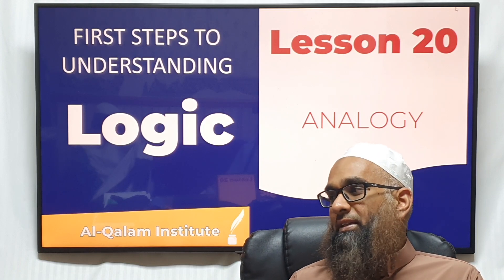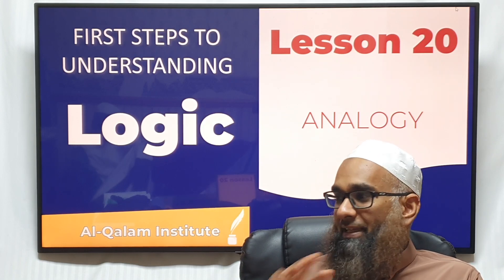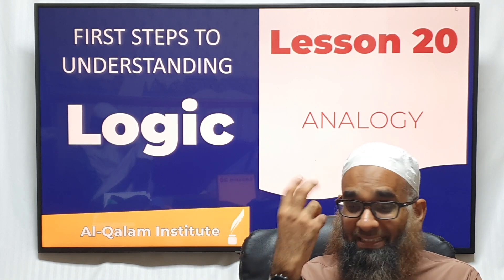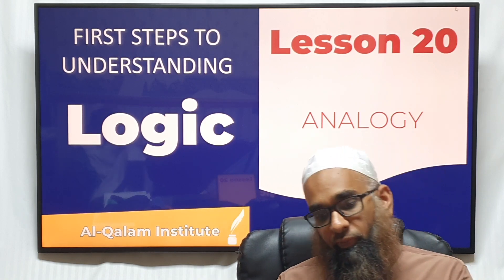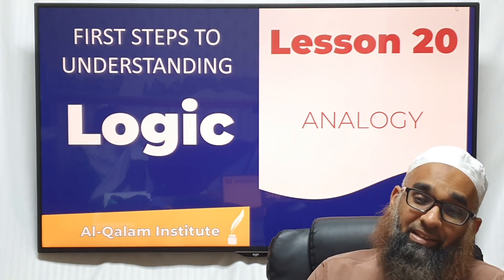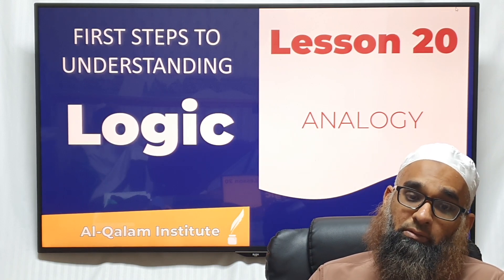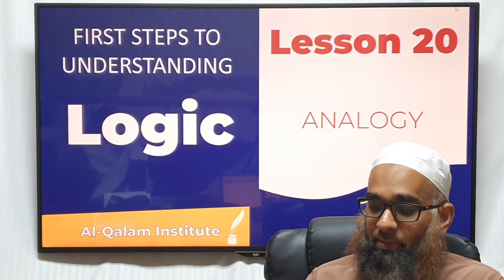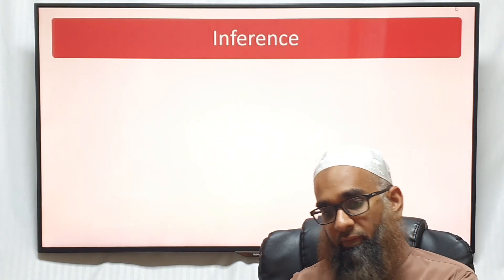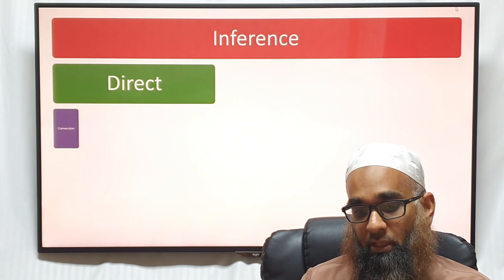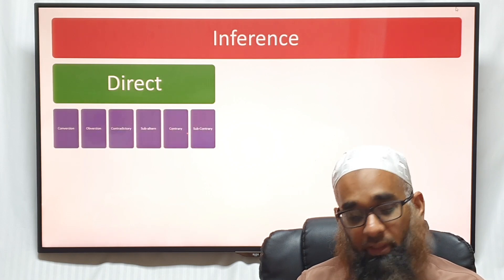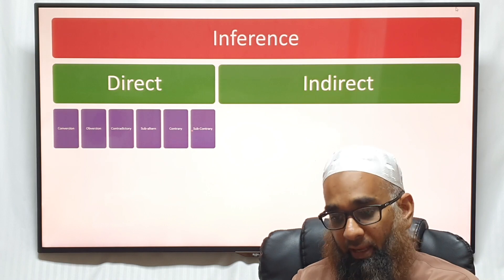Informal logic is one you can understand without the forms — it's about understanding. This kind of formal logic probably ended with induction. So formally we have inference: direct inference includes conversion, obversion, contradictory, subaltern, contrary, and subcontrary. And we have indirect inference — deduction.